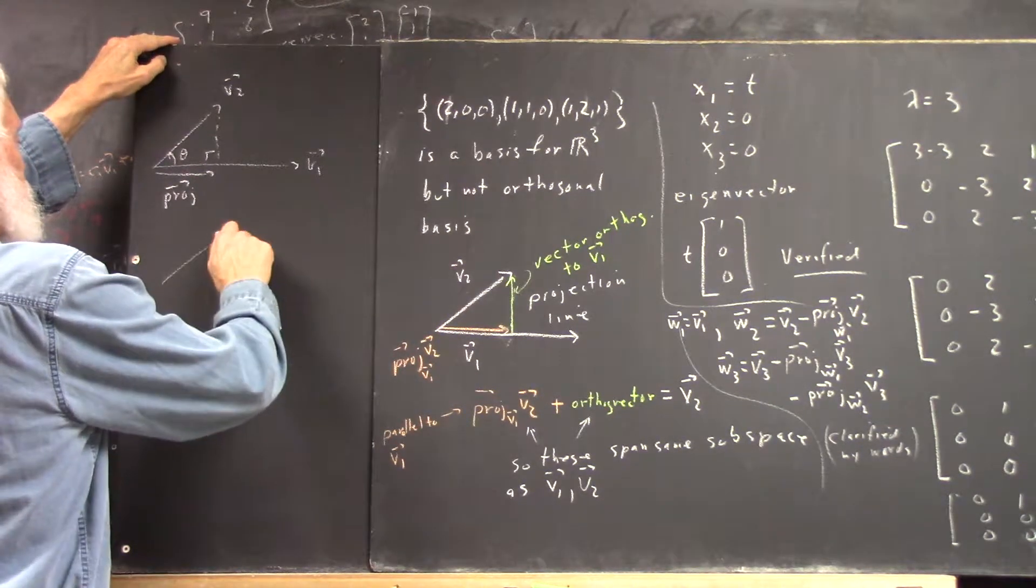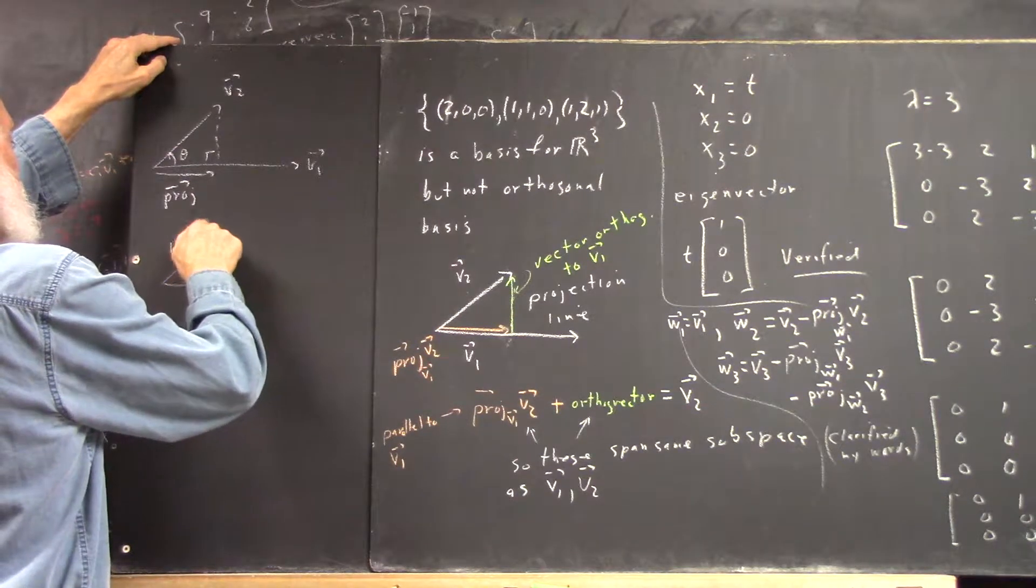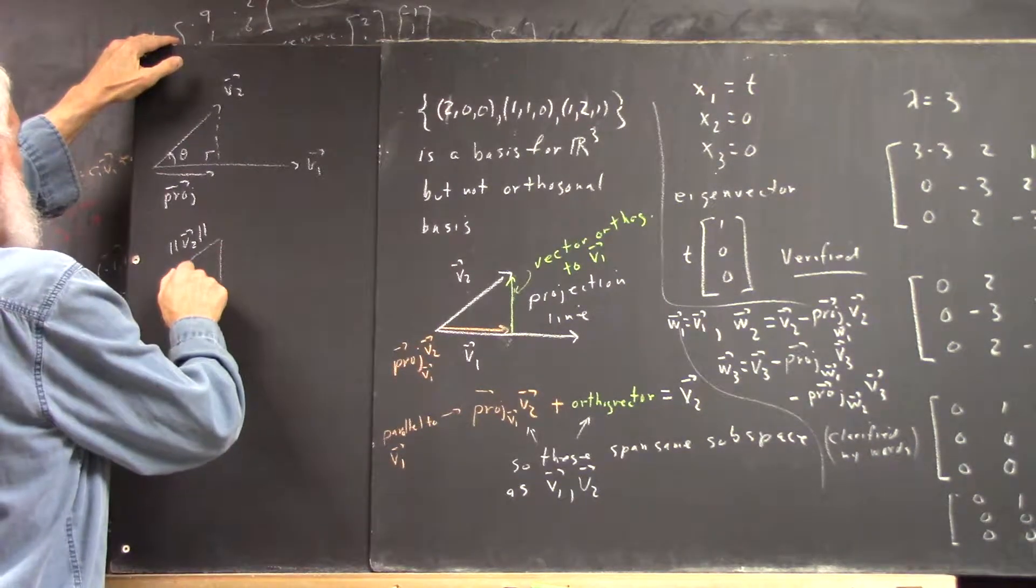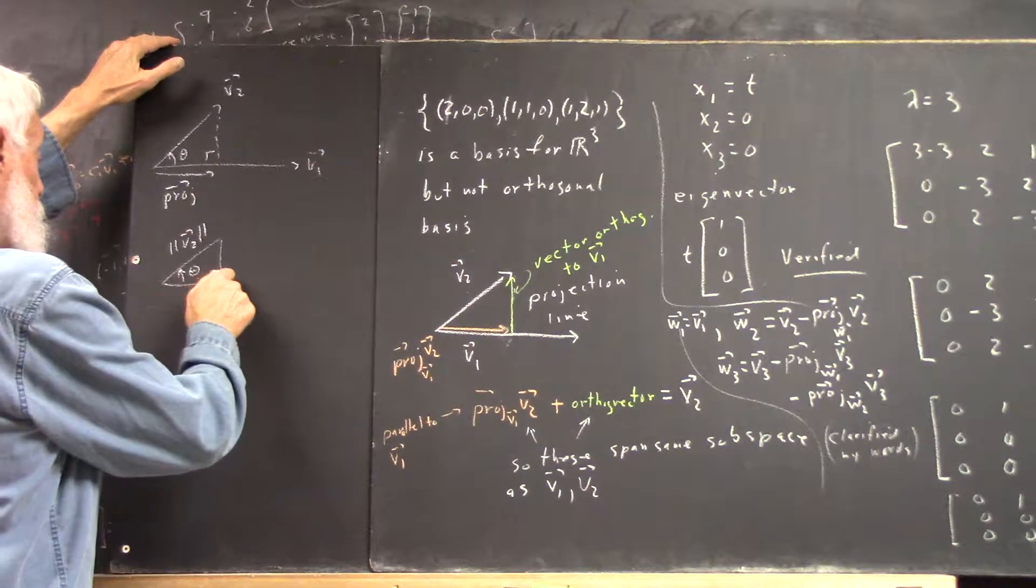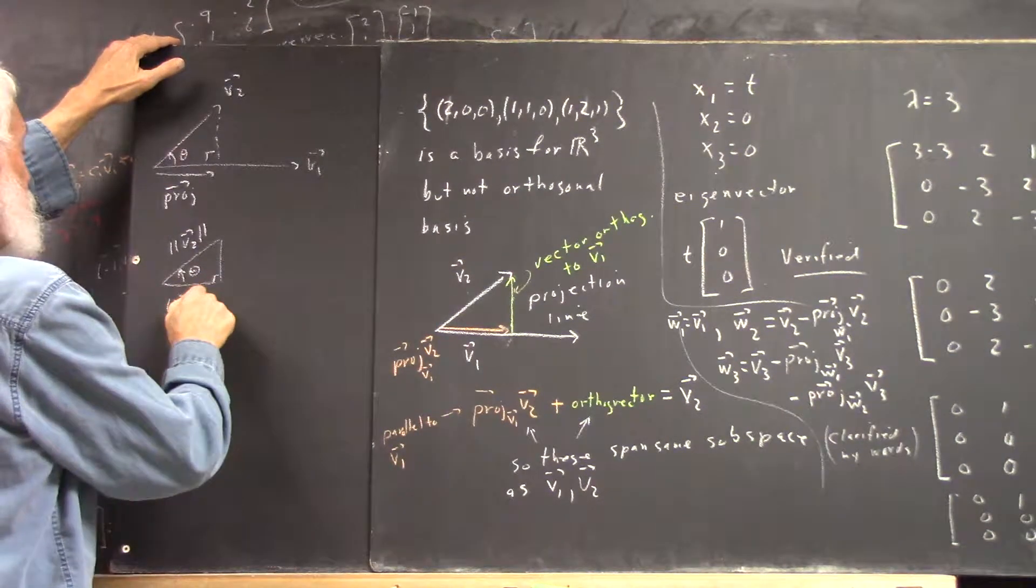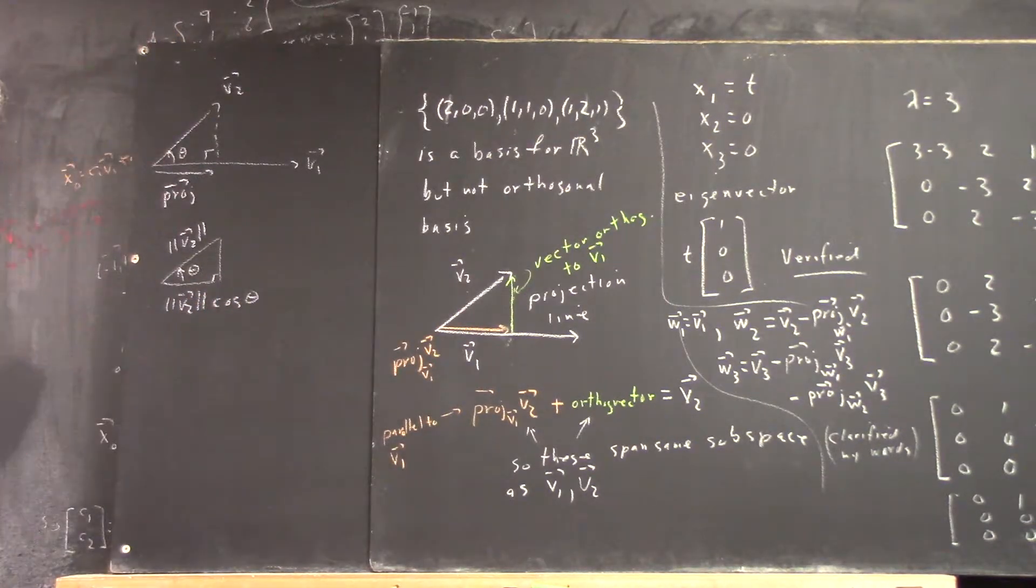And what you've got is a right triangle where you have the magnitude of V2 here. Right? And you have theta here, right angle, so this side is magnitude of V2 cosine theta.